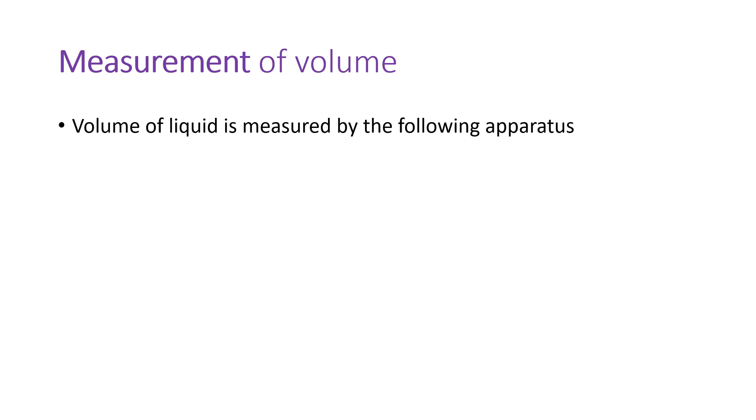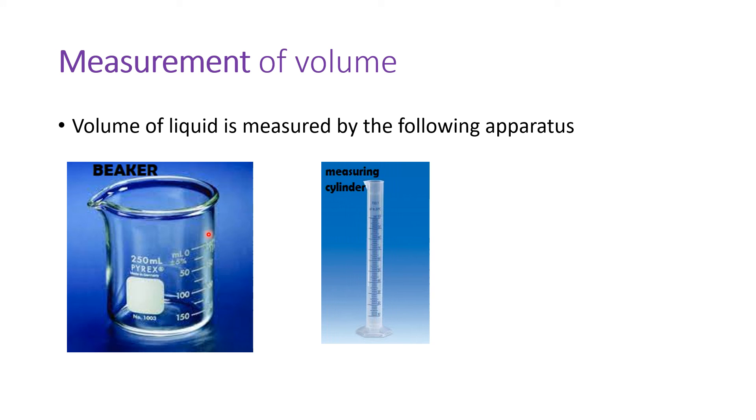Then for finding out the volume of liquids, we use some apparatus. One is a beaker. I have shown you a beaker today. And you have a measuring flask. So it has graduation here. So it is very easy to measure how much liquid is contained in this measuring flask. So we will continue with this in the next chapter. I hope you have understood till here. If you have any doubts, you can call me and ask.